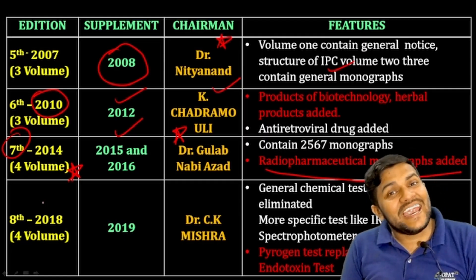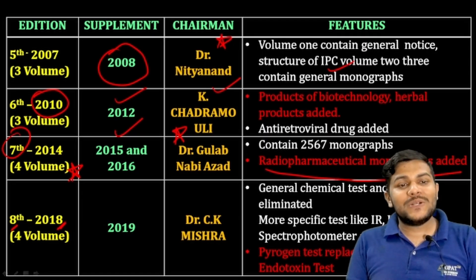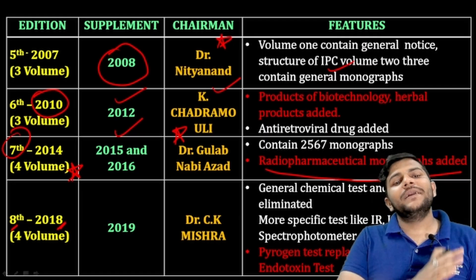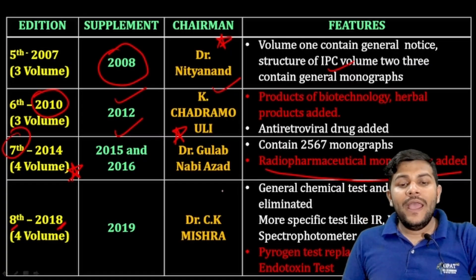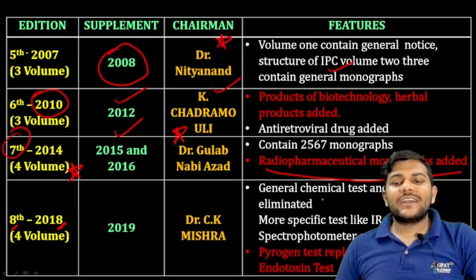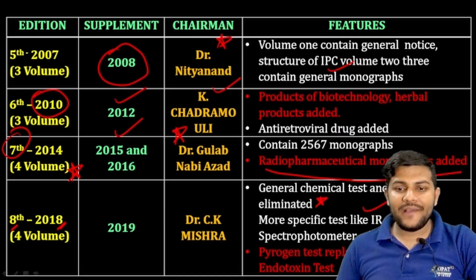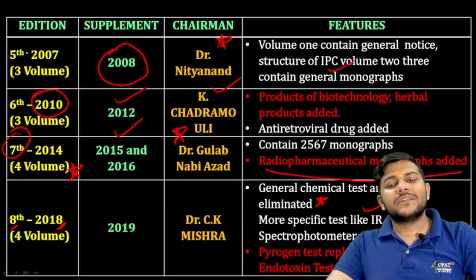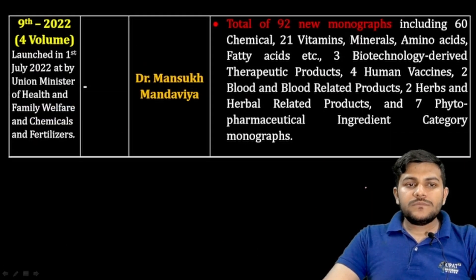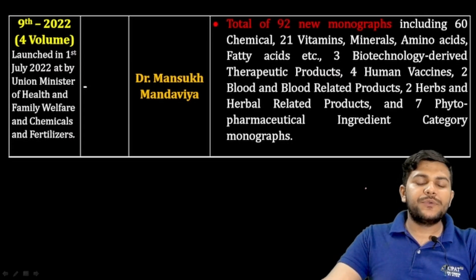The eighth pharmacopoeia was published in 2018 and supplemented in the following year. Dr. C.K. Mishra was the chairman. The TLC journal test was eliminated, specific IR and UV spectrophotometry tests were added in its fourth volume, and the pyrogen test was replaced by the bacterial endotoxin test.